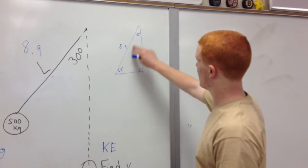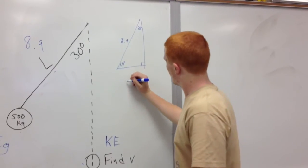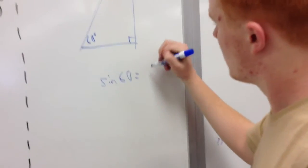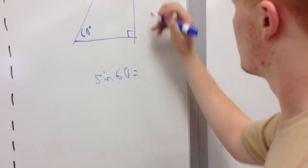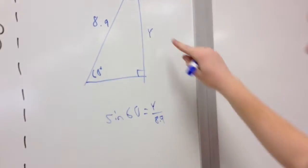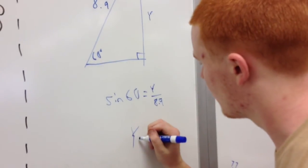And 8.9 is our hypotenuse. So in this case, we can do sine of 60 equals the unknown over 8.9, and we get a y value in this case of 7.7.